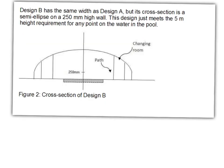So here's what we get told about design B. We've got to check that our model, as it's shown here in the picture, fits those four criteria. And if it doesn't, we have to change it. So design B has got the same width as design A. It's cross-section is a semi-ellipse on a 250 millimetre high wall. So here's the centre of my ellipse, and this is the major axis.